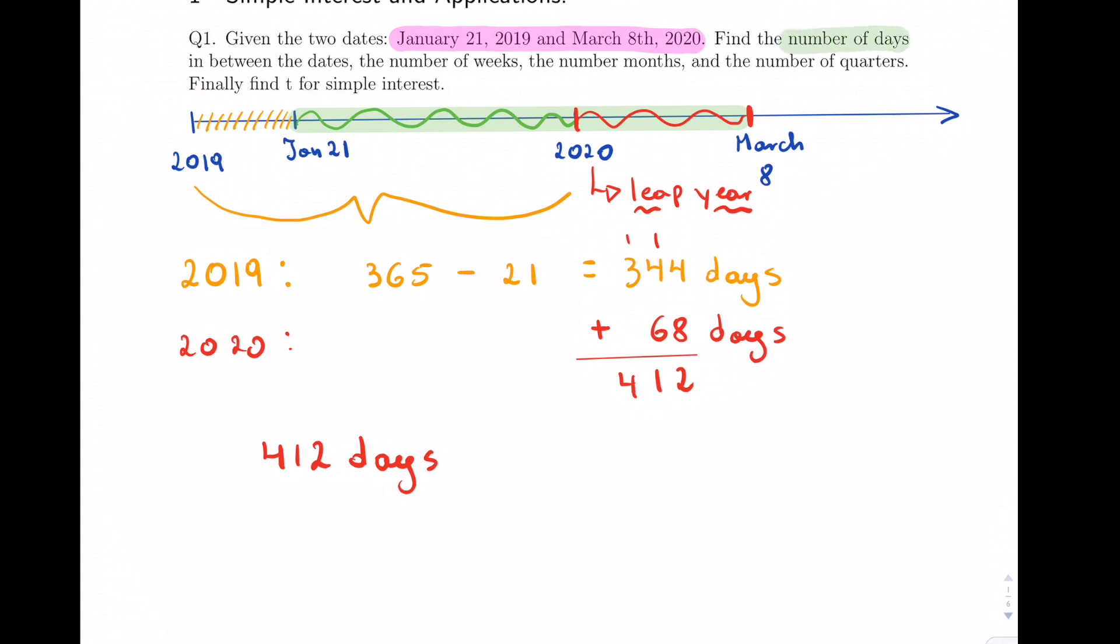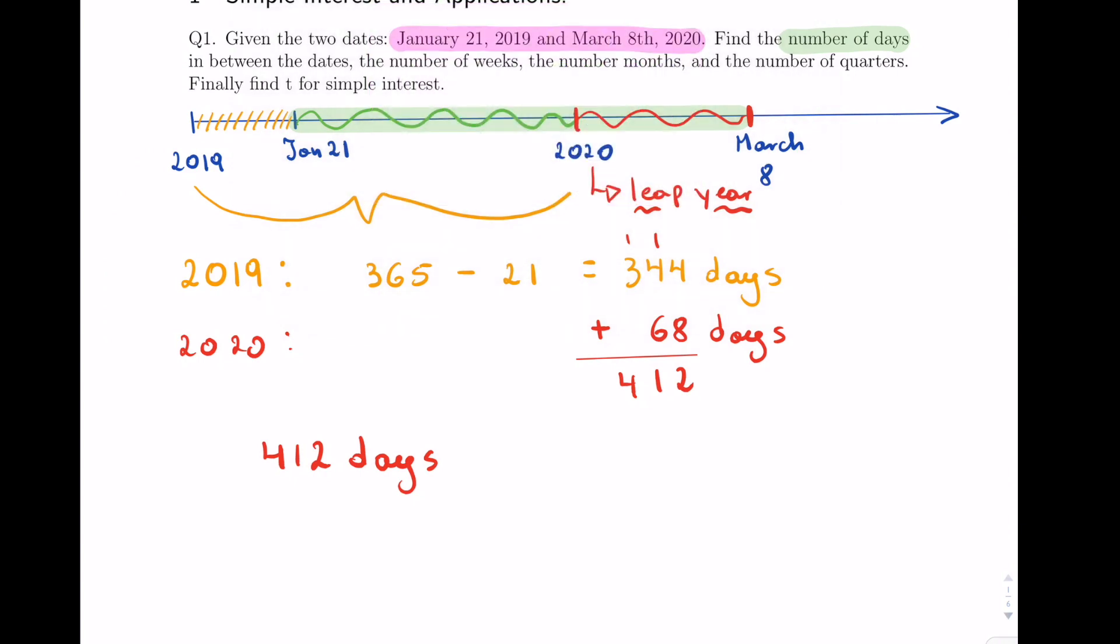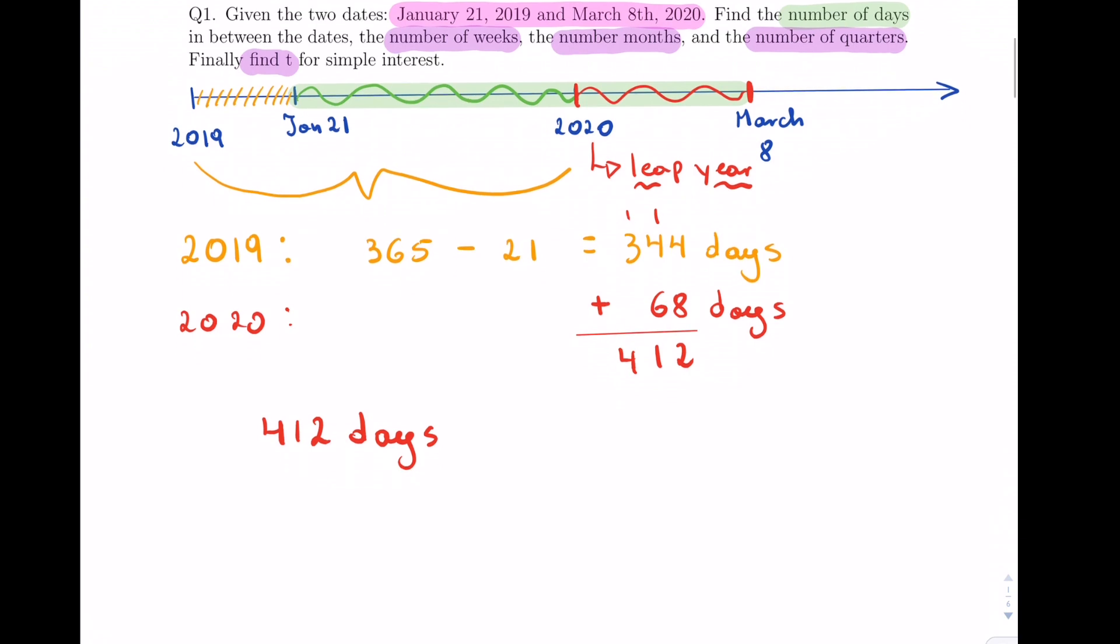We found the number of days. Now they ask us the number of weeks, the number of months, and the number of quarters. We want to find t. We can find that right away, so t equals 412 divided by 365 because that's per year.